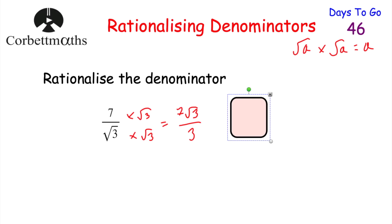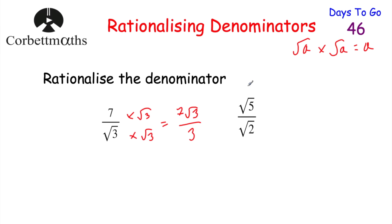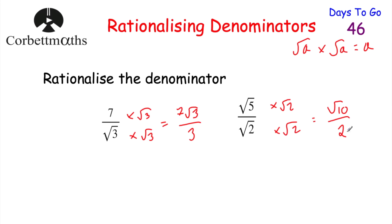Now here's one for you to try: rationalize the denominator of root 5 over root 2. To rationalize the denominator, multiply both the numerator and the denominator by root 2. On the numerator, root 5 multiplied by root 2 gives root 10, and on the denominator, root 2 multiplied by root 2 gives 2. So the answer is root 10 over 2, and the denominator is rational — well done if you got that.